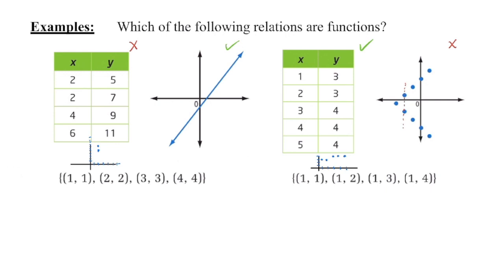For the ordered pairs, look at the x values first. The first set has x values 1, 2, 3, 4 — all different, so this is a function regardless of the y values. In the second set, x is 1 appears multiple times: y is 1 when x is 1, and y is 2 when x is 1. I can't have two different y values for the same x value, so that second set of ordered pairs is not a function.